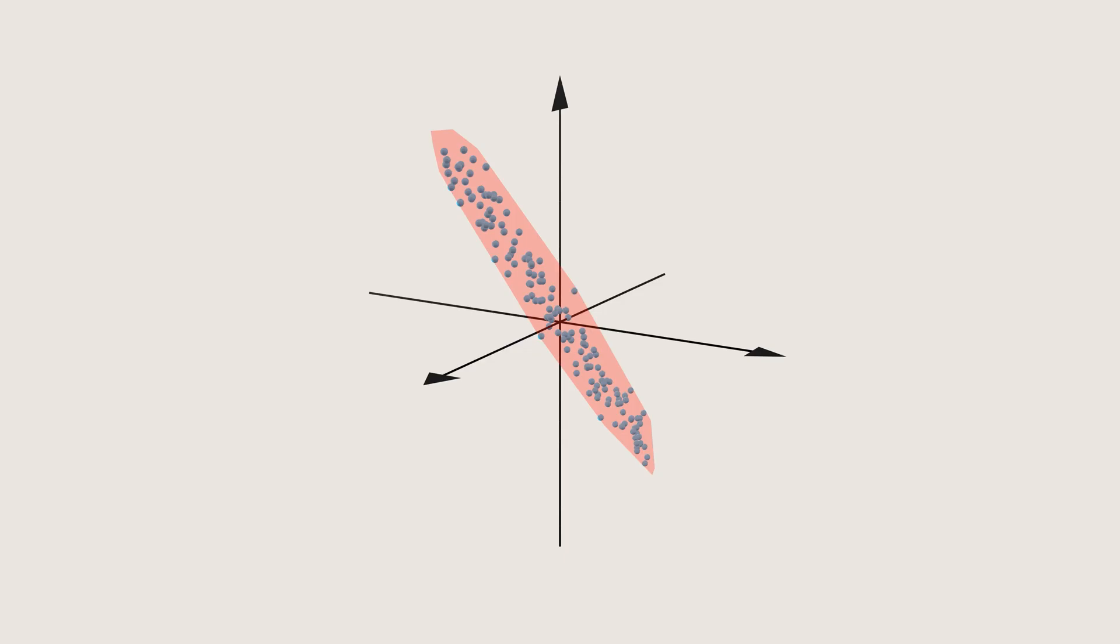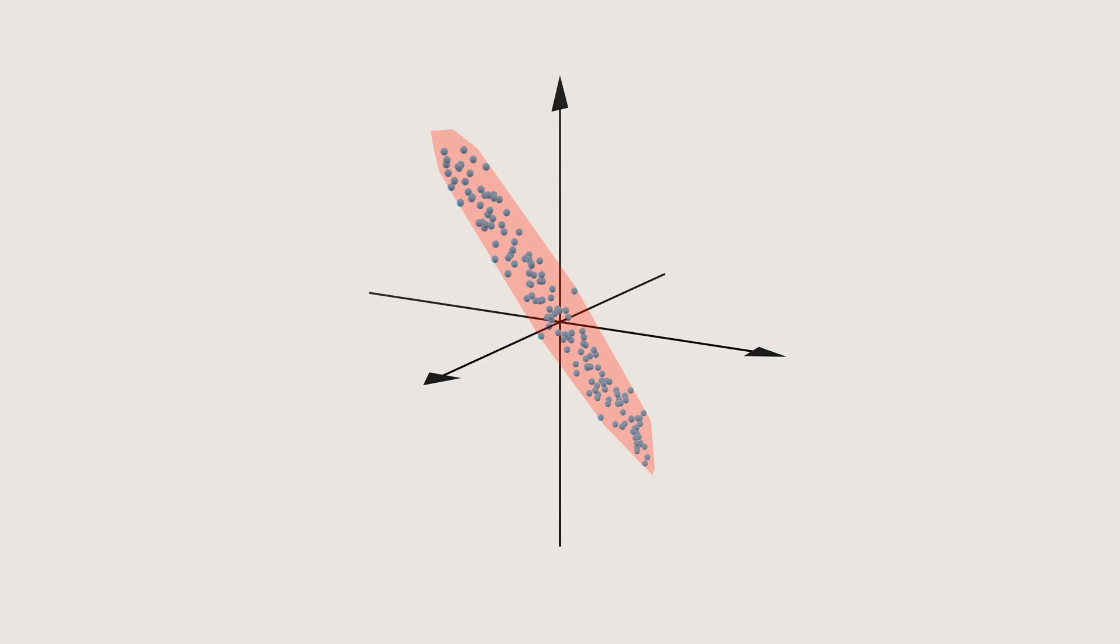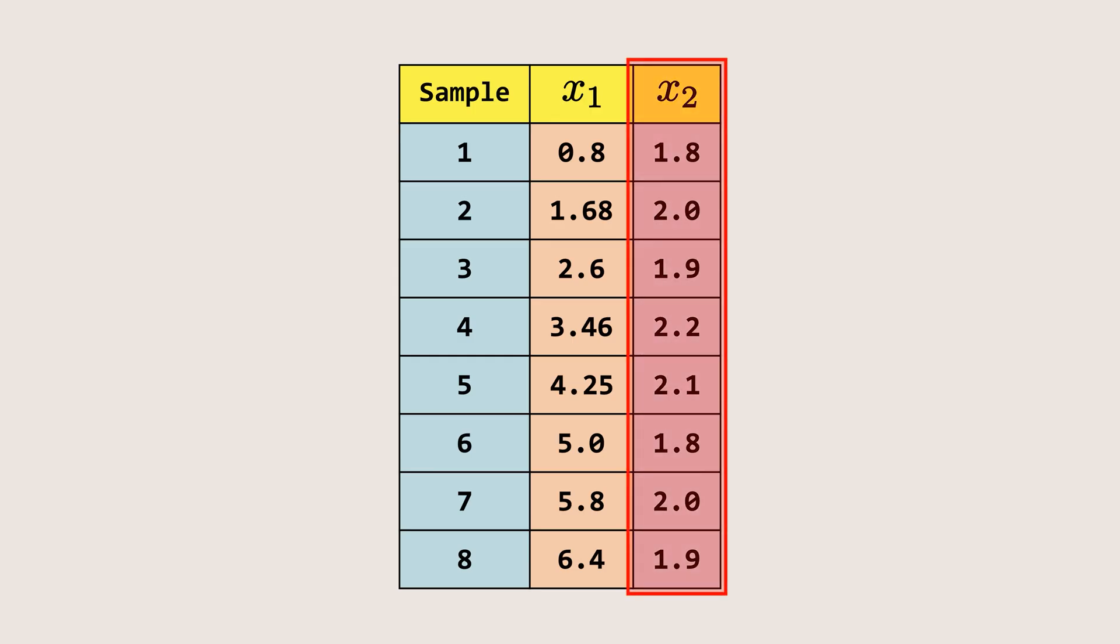But before that, let's first understand the idea of feature selection. Imagine we have a data set with two features or two dimensions. Here features and dimensions mean the same thing. Now, if you look closely at feature X2, you will notice that the data points do not vary much. They are clustered very close to each other.